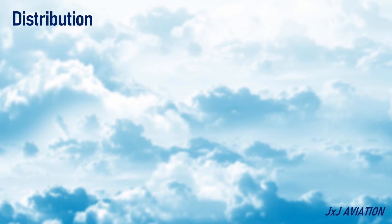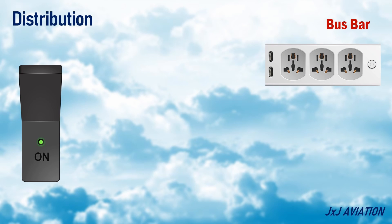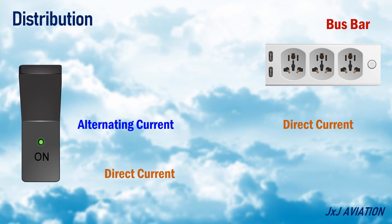Distribution of electric power: The electric supply to the aircraft is controlled by an on-off switch. When set to on, different equipment receive electrical power from the available power source. A bus bar is used to distribute electrical power to the different systems. Some systems may require alternating current (AC), and some systems require direct current (DC). To convert AC to DC, rectifiers are used, and to convert DC to AC, inverters are used.